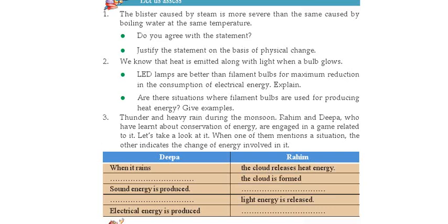One example is the incubator. We use the incubator for hatching eggs. The filament bulb is used in the incubator where heat energy is produced from the bulb, and that heat energy is used for hatching eggs. So we are using the heat energy of the filament bulb in an incubator.